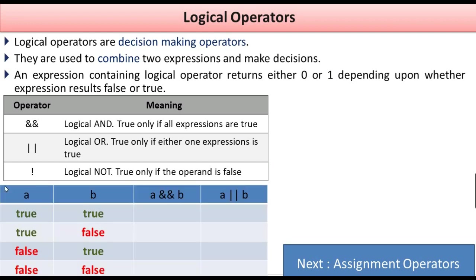Let's say we have two expressions: statement A and statement B. If A is true and B is true, and we combine these two expressions using logical AND, the output will be true, because both statements are true.